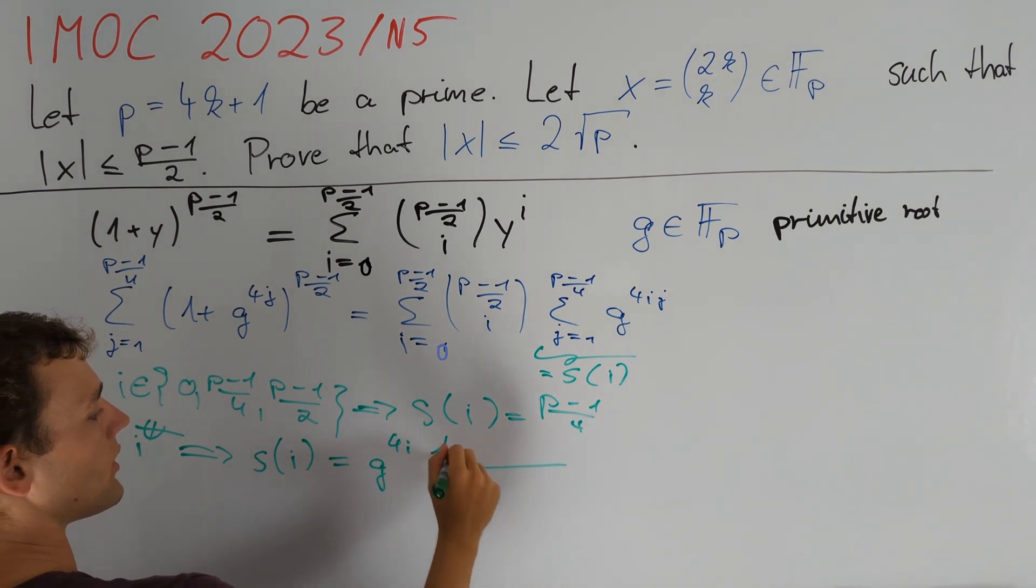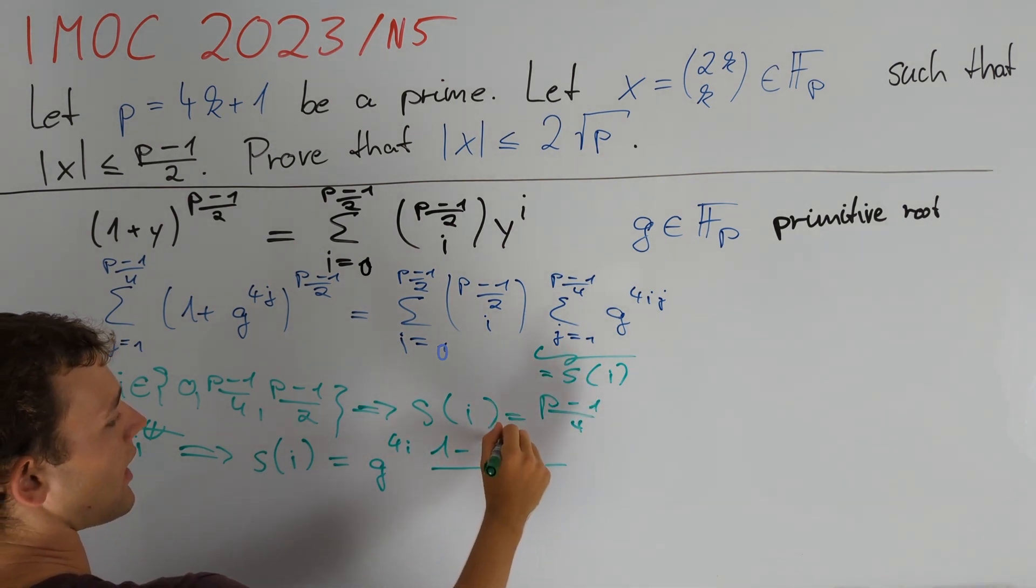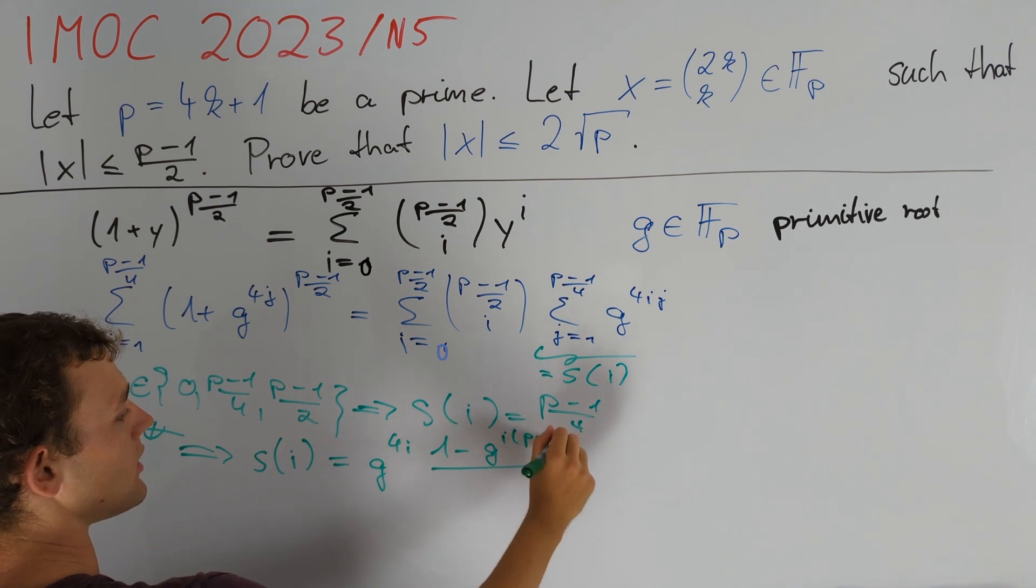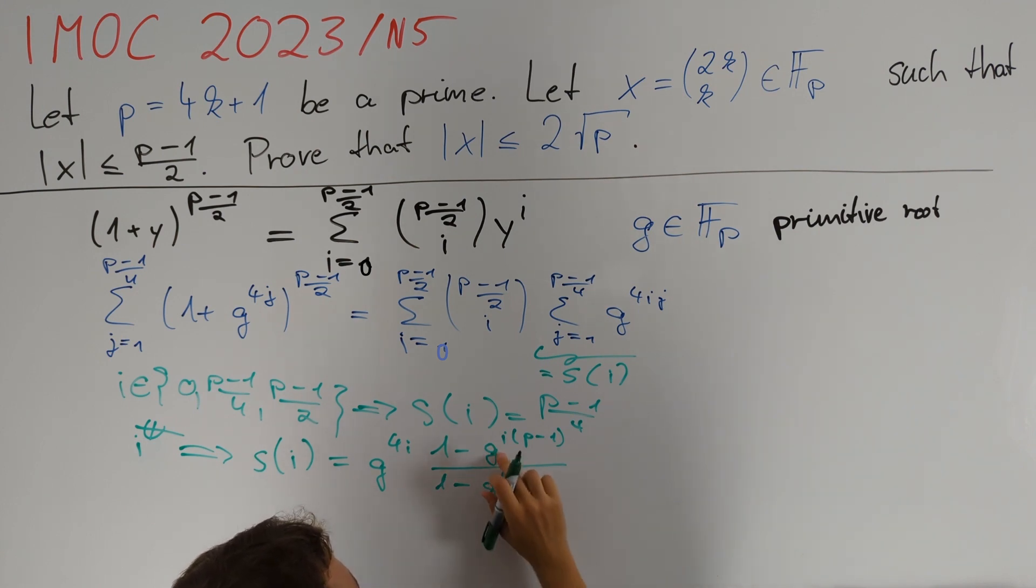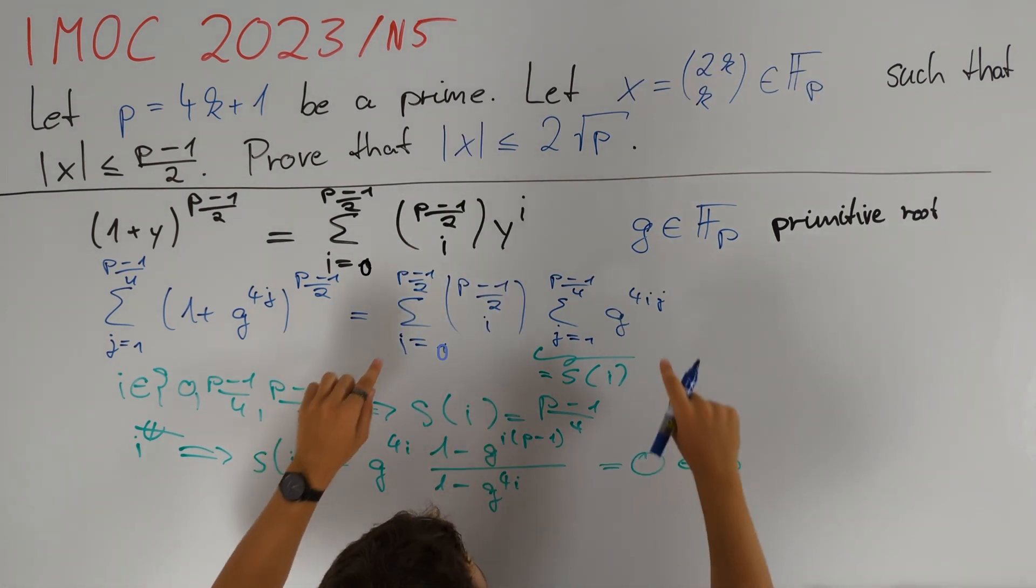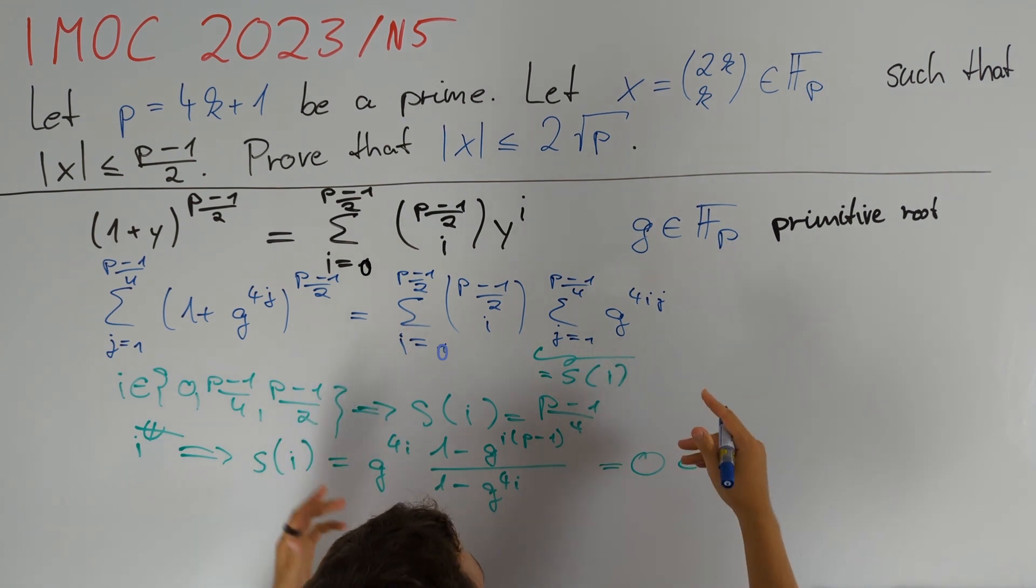By Fermat's little theorem g^(p-1) is equal to 1 in Fp and therefore all of this equals 0 in Fp. Therefore all but three summands here equal 0.